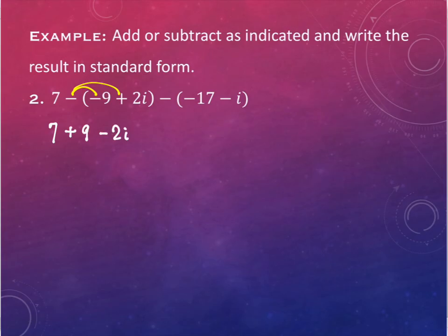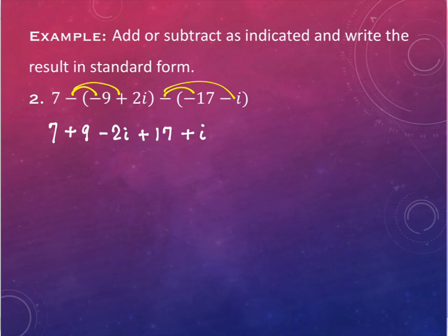And then I'll do the same thing over here — this negative will get distributed through. I will have a positive 17 and a positive i. So take that 10 seconds to distribute your negative. Don't try and combine them before — you're going to make a mistake. Just take the 10 seconds to do it.